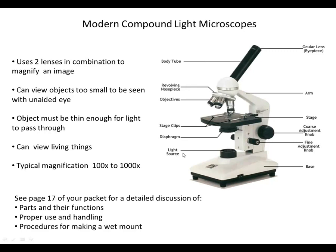We have the light source — in our modern compound light microscopes, that's a lamp. The diaphragm, underneath the stage, is what we use to adjust the amount of light that enters the lens system. This is an iris diaphragm; the microscopes we use in class have disc diaphragms, and you can change the amount of light by changing the size of the opening. The objective lenses are used in combination with the ocular lens to get our total magnification. Our class microscope has three objective lenses. The red-banded scanning lens has a magnification of 4x.